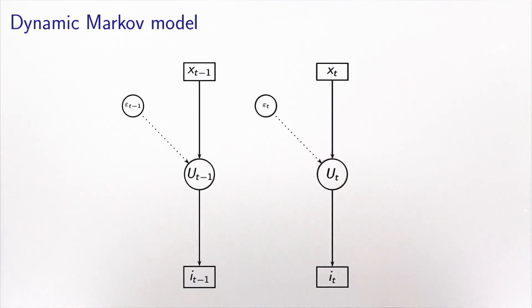If you remember, this is how I illustrated the static model, where we had a choice model for each time interval, which was independent from the choice model of the previous time interval. Now what we would like to do in the context of the dynamic Markov model is to take into account the fact that the utility at time t may be influenced by the choice made during the previous time interval.